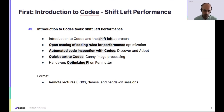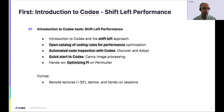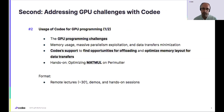You will also see a quick walkthrough of how to optimize the well-known Pi computation in Perlmutter. The good news is that the same sequence of steps you will see with the Pi example is exactly what you will need to use in the following parts of the training. For instance, in part two — also covered today — we will be addressing several GPU challenges, including how to identify parts of the code that can be offloaded to the GPU.